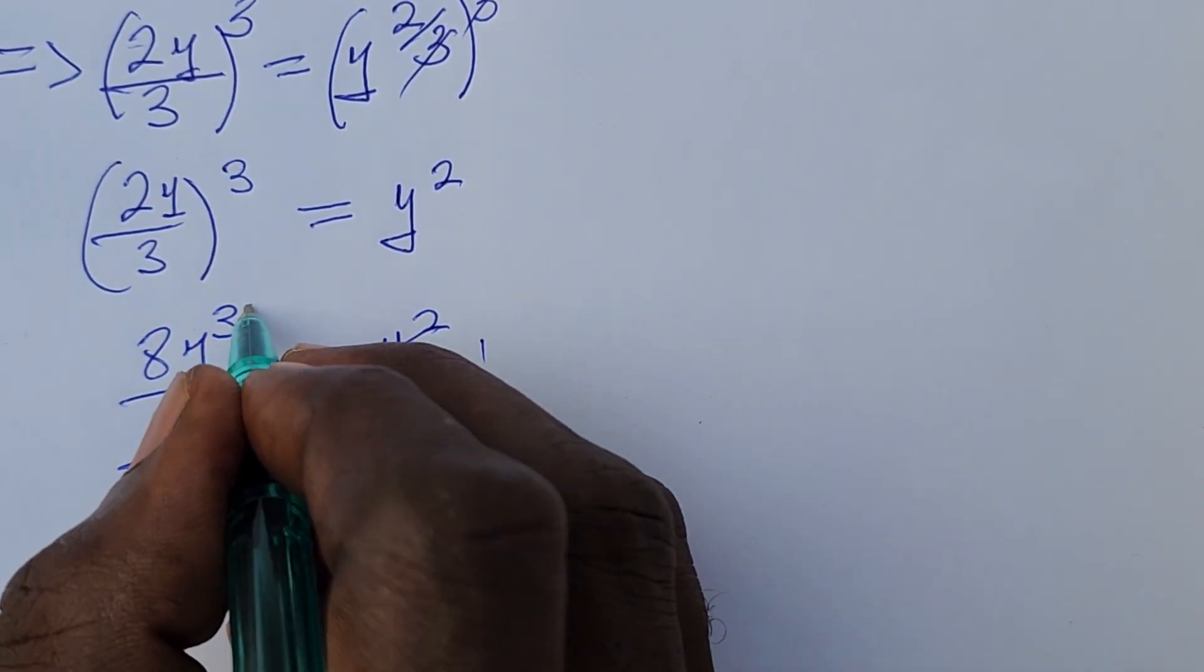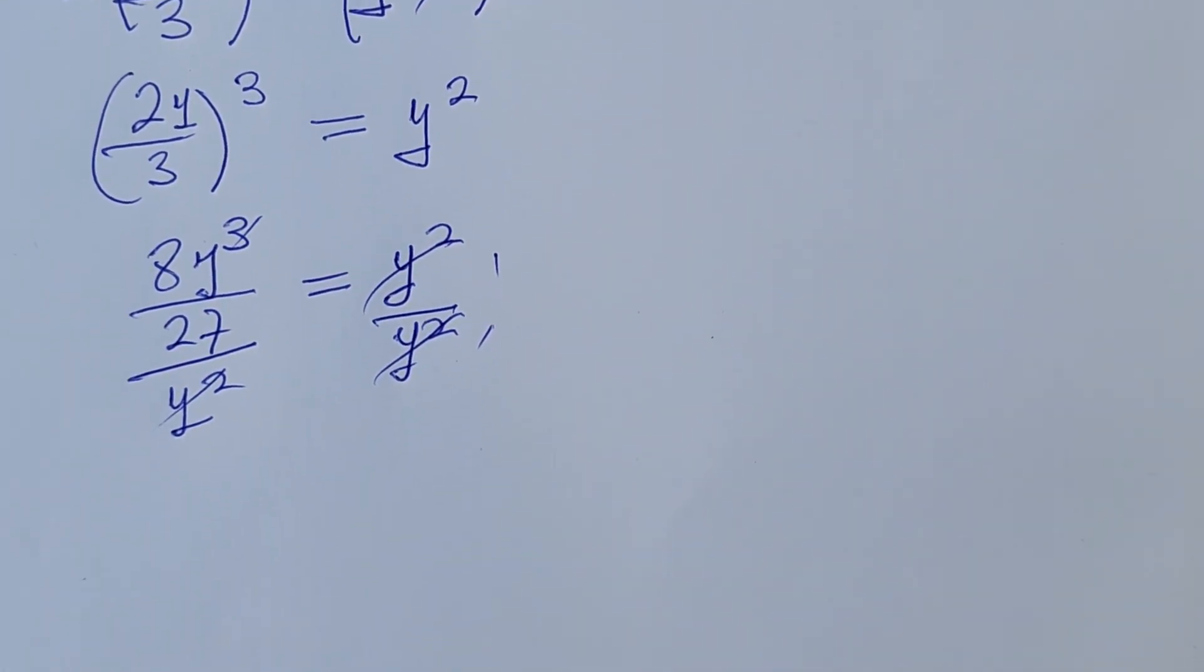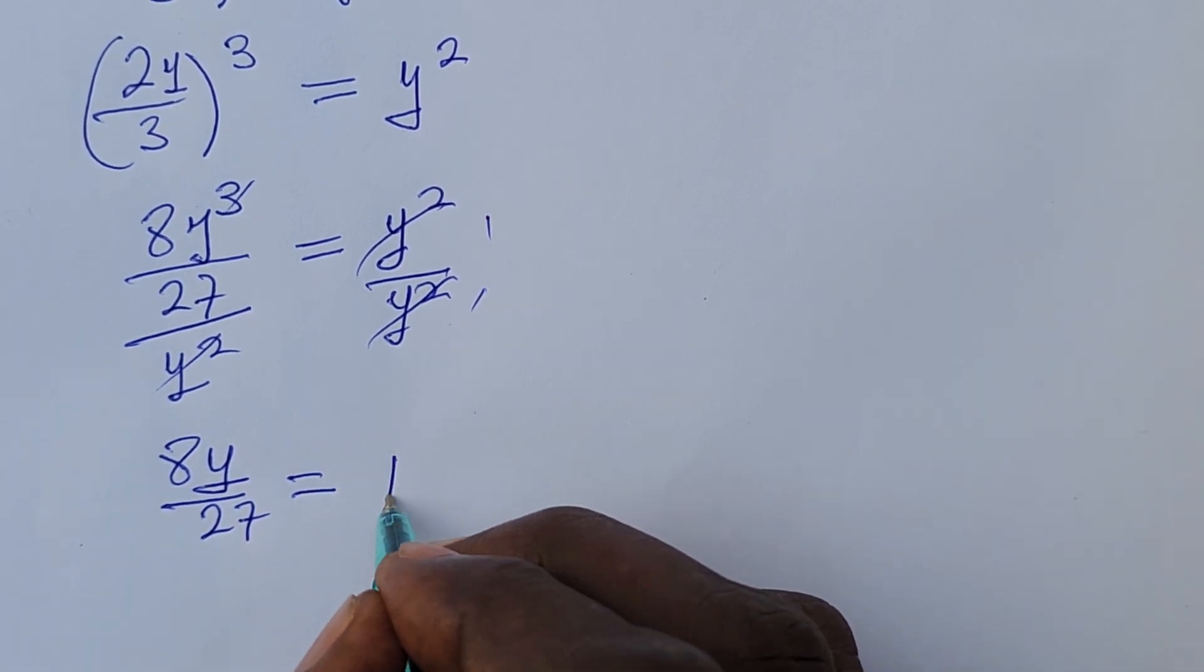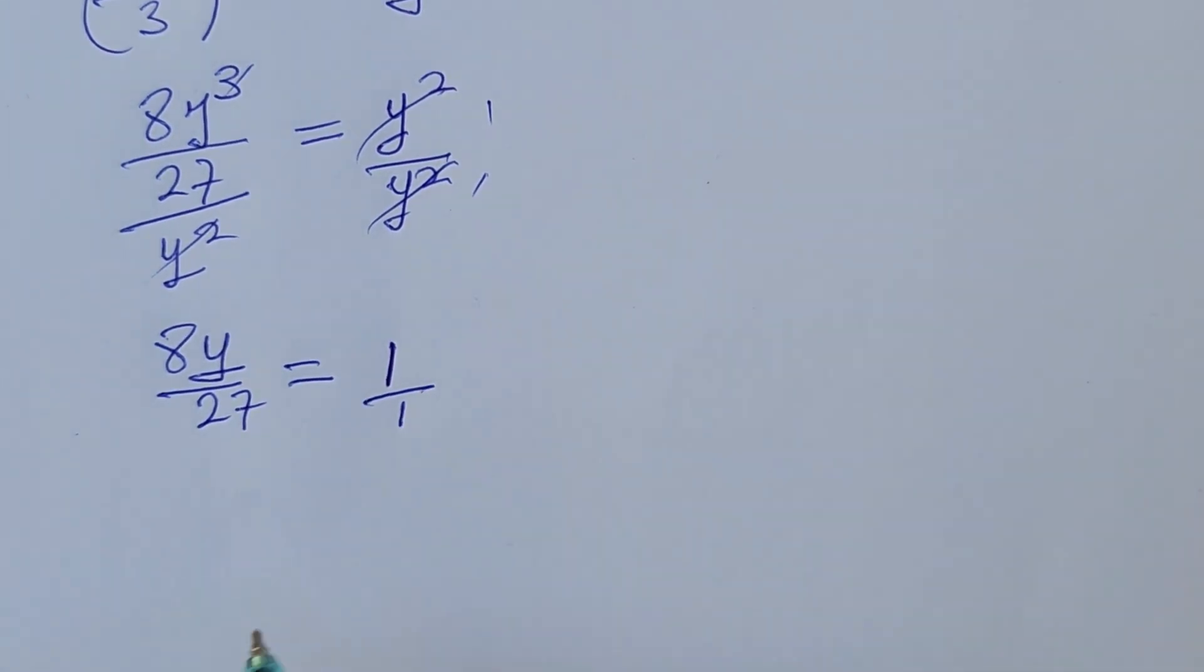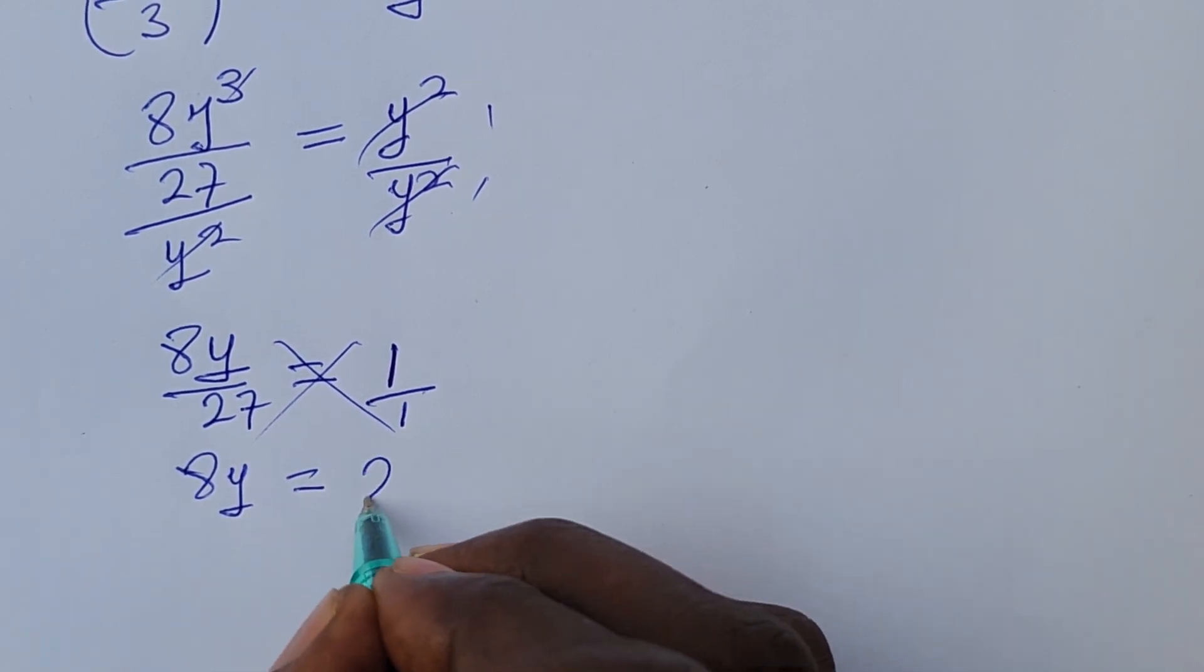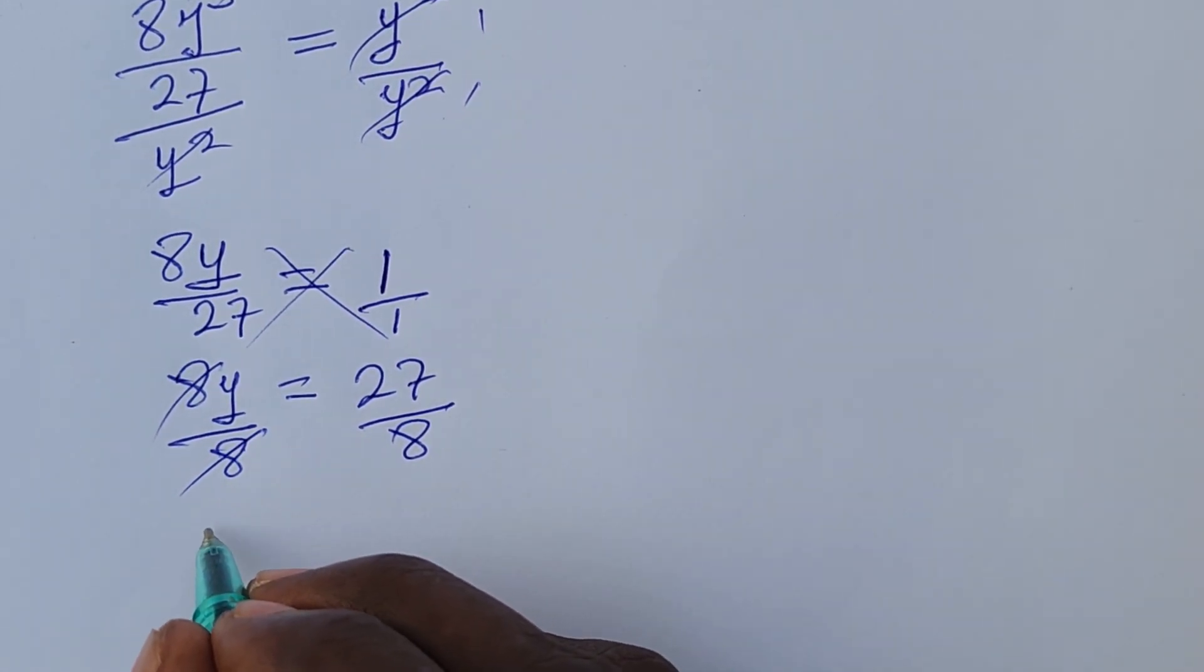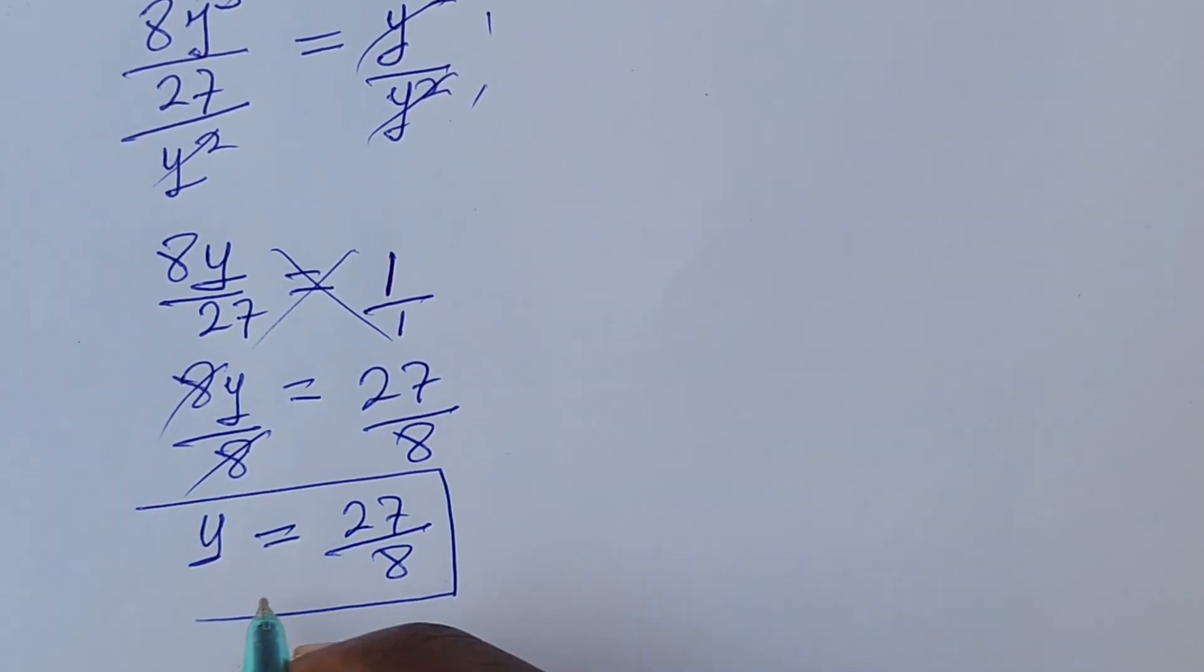So we have our equation to be 8y over 27 is equal to 1. We're looking for y, so just cross-multiply. If we cross-multiply, we're going to have 8y equals 27. Divide by 8. So we've now succeeded having y is equal to 27 over 8.